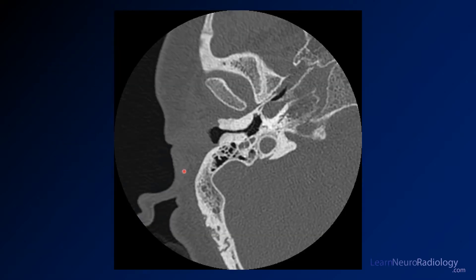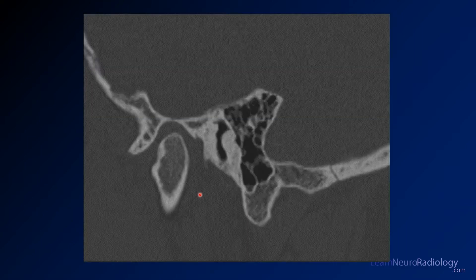Here you see the images from the right temporal bone. Where the EAC should be, you have a proliferation of bone. You can see a little wisp of the tympanic membrane, but this is markedly narrowed from normal. On the sagittal images you see the same thing — the EAC has been narrowed in the AP dimension, with a lot of bone along that external auditory canal.